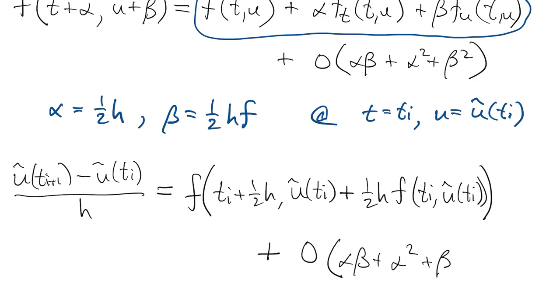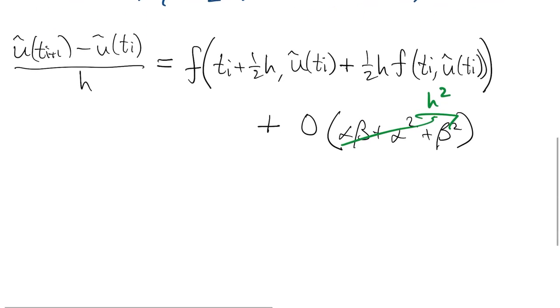Everything that's not accounted for explicitly because we truncated the series involved is at order h squared and higher. So this will be the basis of a second order accurate initial value problem method.